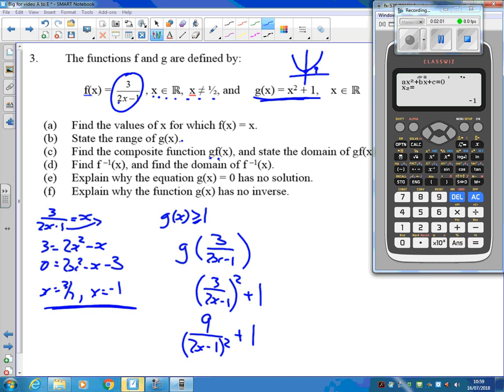So 3 squared is 9 over 2x minus 1 all squared plus 1. Now, does it say I've got to leave that in any particular form? I'll have a look. It's a bit underneath my calculator, isn't it?